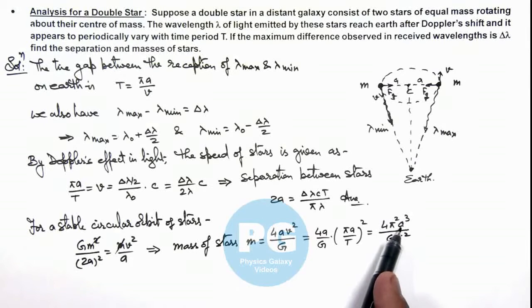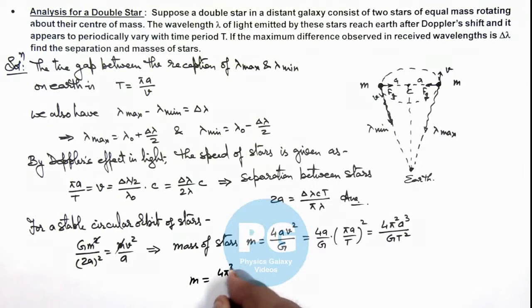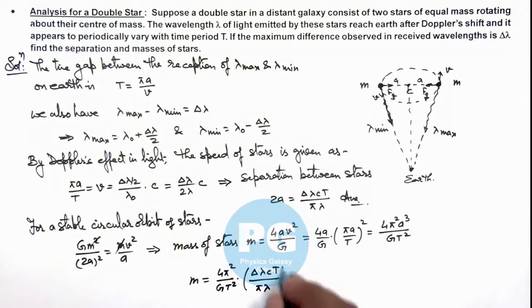So if this is the mass of star, then we can substitute the value of a which we have calculated above. So this m can be written as 4π²/GT² multiplied by the value of a we can substitute from here: ΔλcT/πλ whole cube.